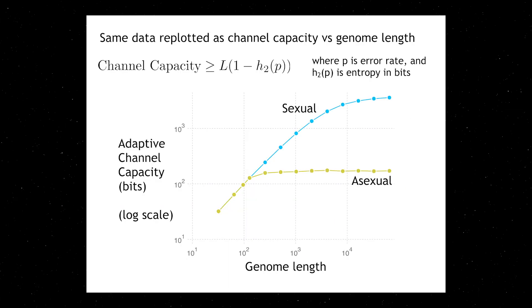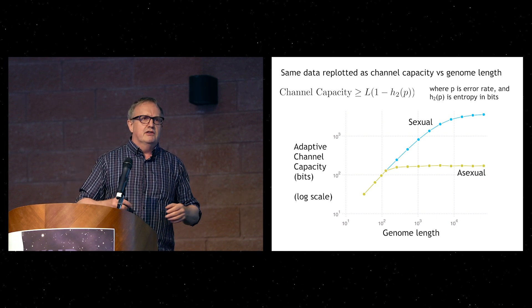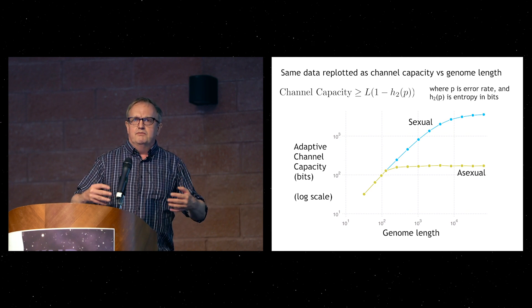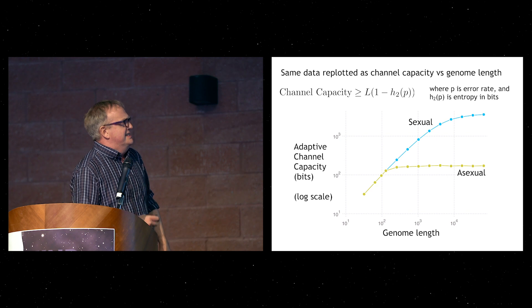I'm going to argue that it is indeed a channel capacity. If we plot one minus the base-two entropy of the fraction of agreements times the length of the genome, we see completely different behavior for sexual and asexual evolution. For asexual evolution, it doesn't matter how long your genome is — you still get exactly the same result. There's no advantage to having a long genome. For sexual evolution, you have this curious situation where long genomes give you, apparently, vastly more information. You don't often see information on a log scale — information is already a logarithm — and here we've got more than 10 times more bits.